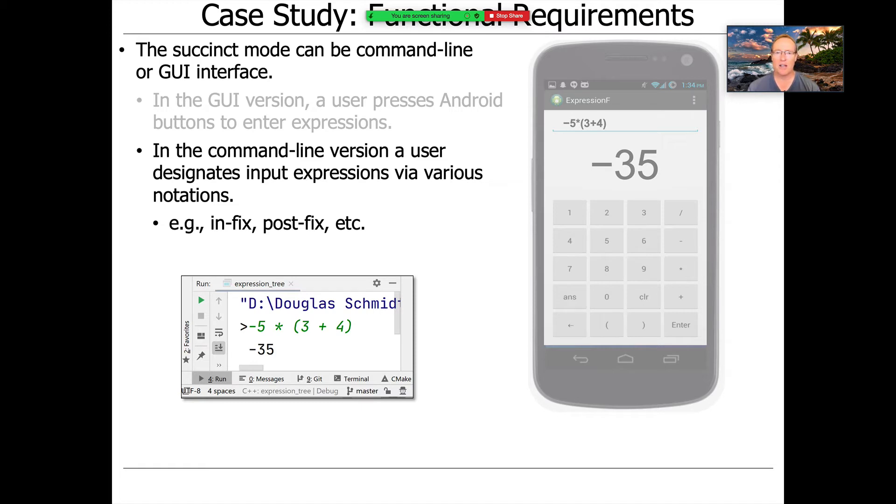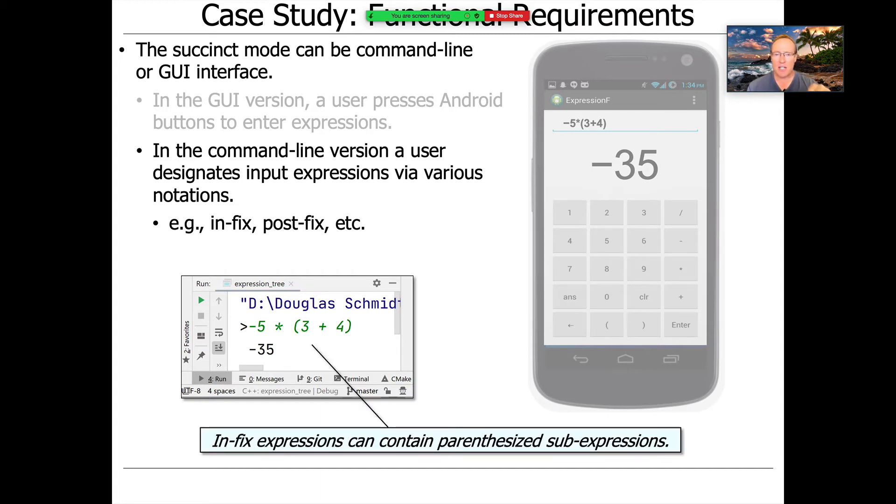So you can see here I could type in minus five times the quantity three plus four. And my command line version spits out minus 35, which, of course, is the right answer. As you can see, these infix expressions can contain parenthesized sub-expressions to some arbitrary nesting depth.